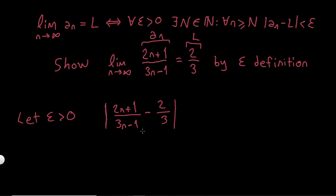So now if I just multiply this part by 3, this part by 3n-1, I will have 3 times, 6n+3 minus 6n, and this will be minus minus 2, which is plus 2, over 3 times 3n-1, which is 9n-3. This is just algebra.